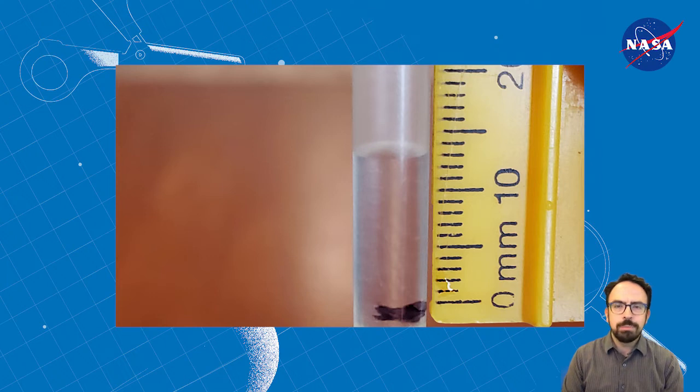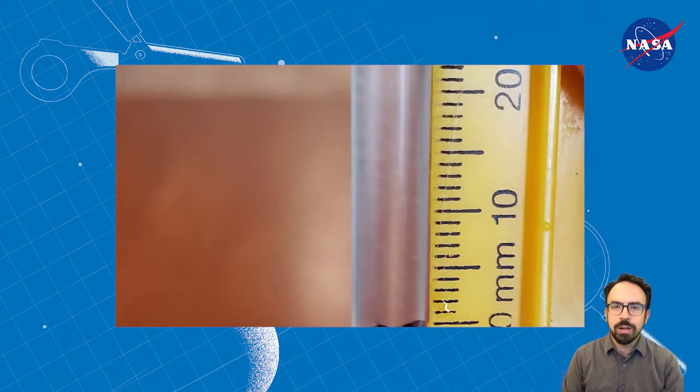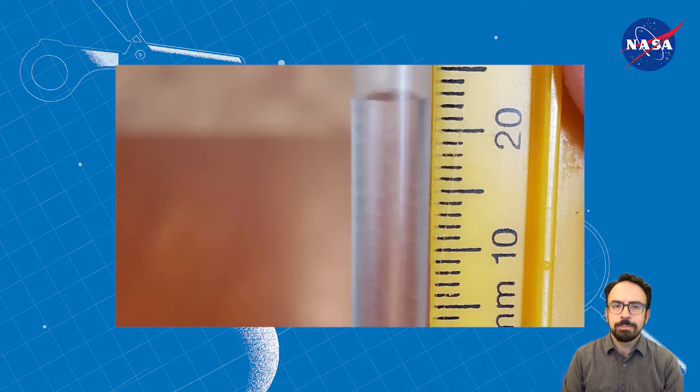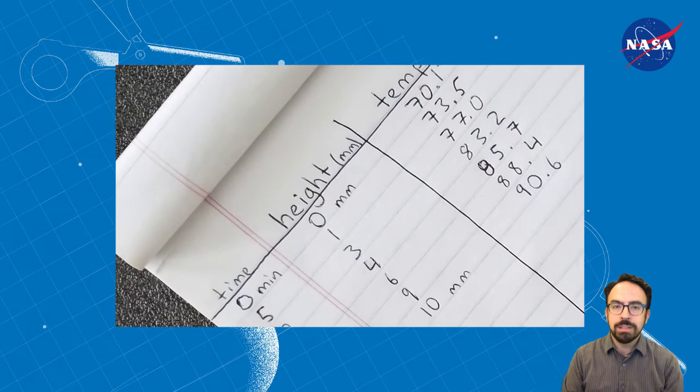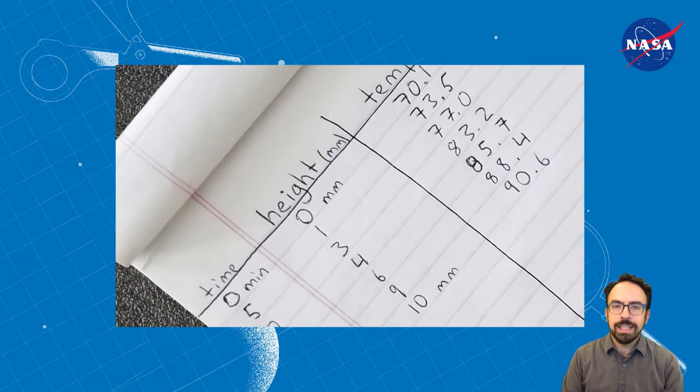If you don't have a ruler, simply observe what's happening to the water level and make a note of it on a piece of paper. If you're using a thermometer, record the temperature at each interval too.